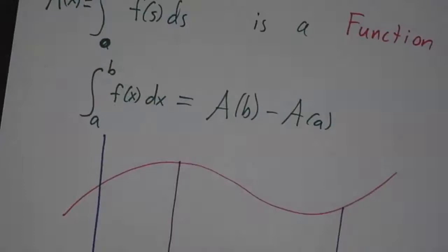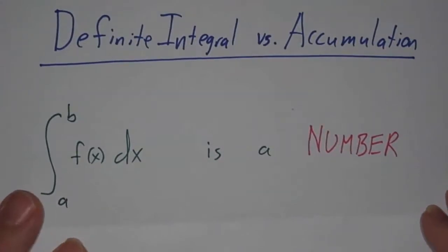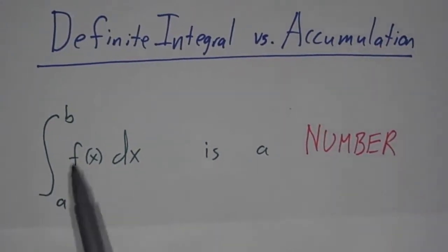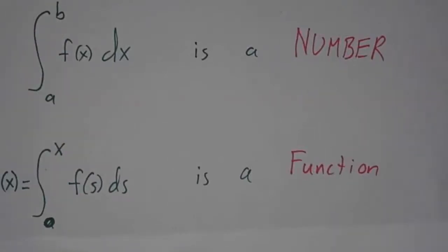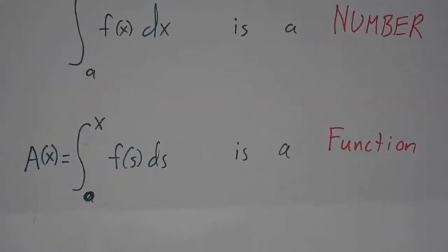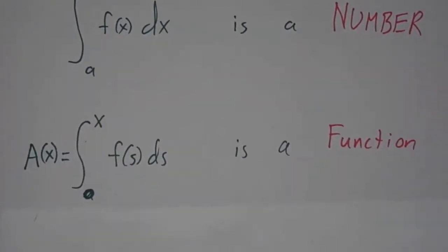So what's so great about this function? Well, in some sense, it captures all the information about definite integrals. See, integral from a to b of f(x)dx, that's a number. That's the amount of area between a and b. A(x) is a function. It's a function of x. It's all the area from 0 to x under the function f(s).